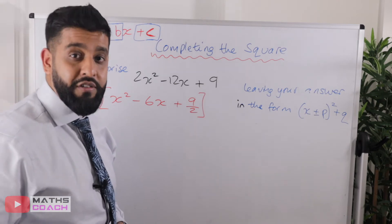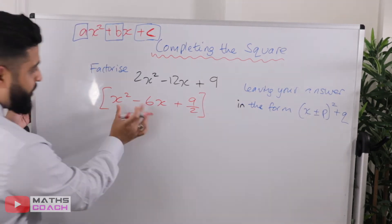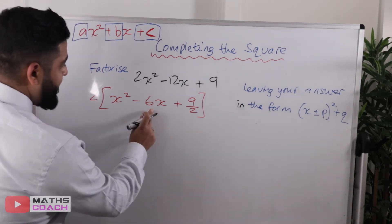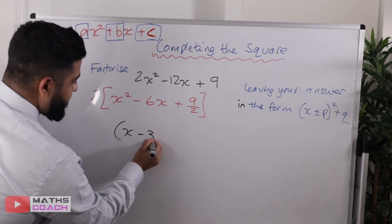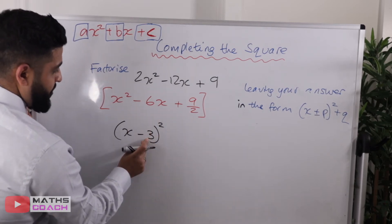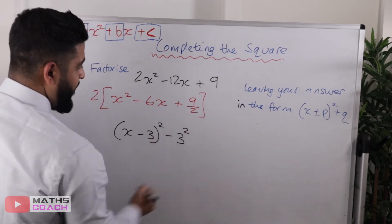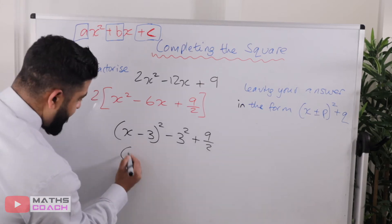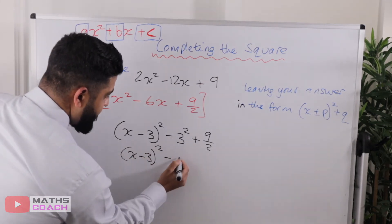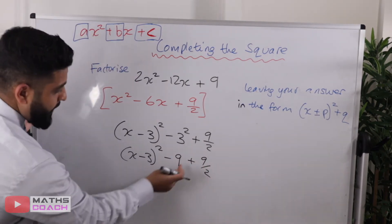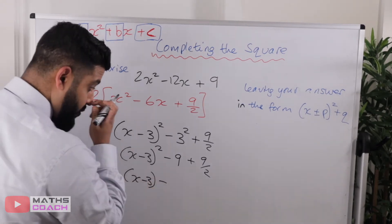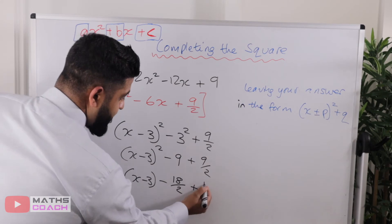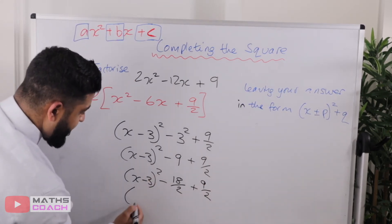Next we're going to ignore that 2 and just focus on what's inside the square bracket. Step number 2 is to divide the b coefficient by 2: we have x minus 3 squared, since 6 divided by 2 is 3. Then we take away 3 squared and the 9 over 2 remains outside. So x minus 3 squared gives us minus 9, and I'm going to replace that 9 with a fraction — 18 over 2 — so that the denominator matches.